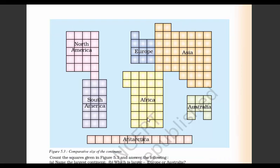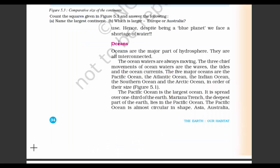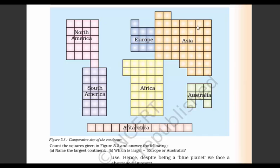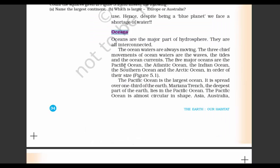On page five, a block diagram shows all the continents — you can see the size of each and easily figure out which is small and which is the largest. The main topic of this page is oceans. Oceans are the major part of hydrosphere and they are all interconnected. The three chief movements of ocean waters are waves, tides, and ocean currents.